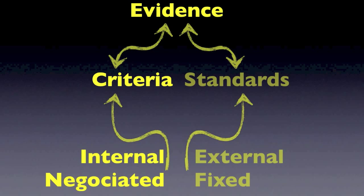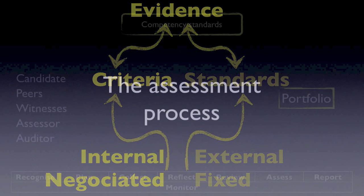We can have different types of criteria or standards. They can be negotiated or they can be fixed and external, like standards for a profession or within a sector. But you could also have standards defined within a classroom, for example, for a specific type of exercise of competency.